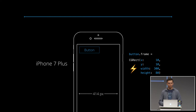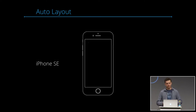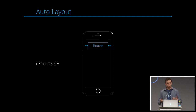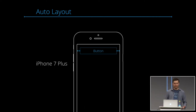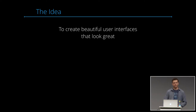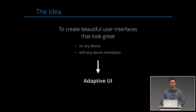A way better approach is not to set the frame explicitly, but to describe our intention semantically: we want a fixed spacing to the screen edges on both sides of the button. We add those tiny blue lines in Interface Builder — or in code — to indicate the spacings, which we later call constraints. When we use a different device with a different screen size, it resizes automatically. That's the basic idea of Auto Layout: to create beautiful, adaptive user interfaces that look great on any device with any orientation.